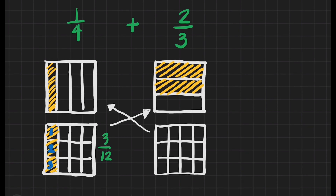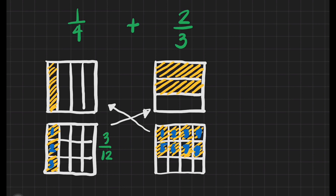The next thing we should do is follow 2/3 — how it is shaded — so we'll just shade it. We will count the number of shaded parts: 1, 2, 3, 4, 5, 6, 7, and 8. We have 8 shaded parts out of 12.